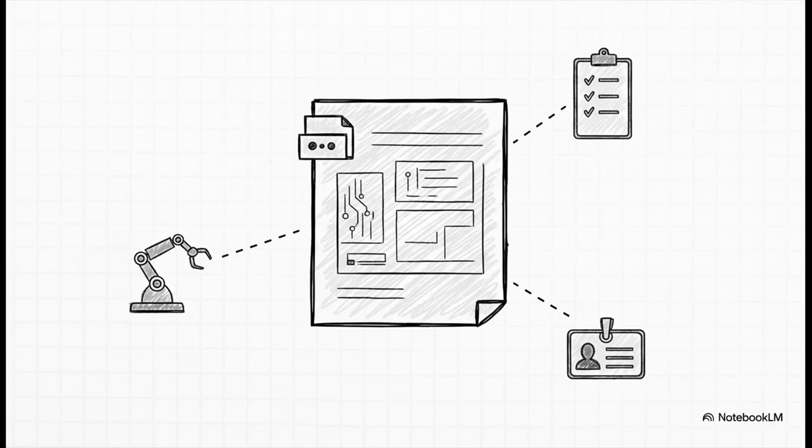And the blueprint for all this? It's actually super simple. At the core of every single skill is just one file. A skill.md file. A simple markdown file. That's the central command document. It directs the whole show, telling the AI the what, the why, and the how for that specific task.